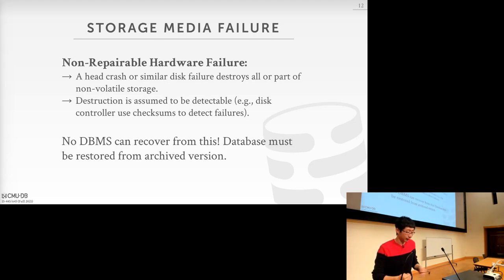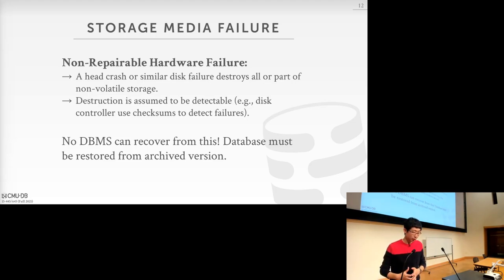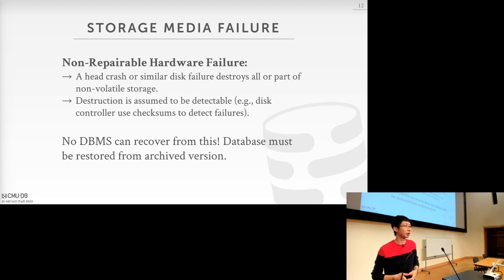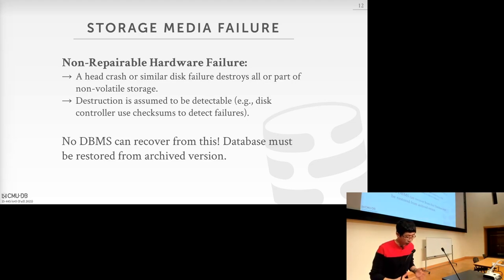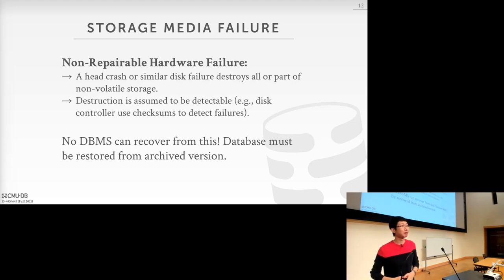The third type would be storage media failure — your data could be corrupted on disk, say, from a fire that burned all the disks in your data center. Transaction failure and system failure are the failures that the database system can deal with using logging and recovery. For storage media failure, you could use redundant disks, install a RAID array, or in next week's class on distributed databases, we'll discuss installing additional copies — but that's not the job of logging and recovery. Any questions on the different types of failures and the responsibility of our database algorithms, especially logging and recovery?